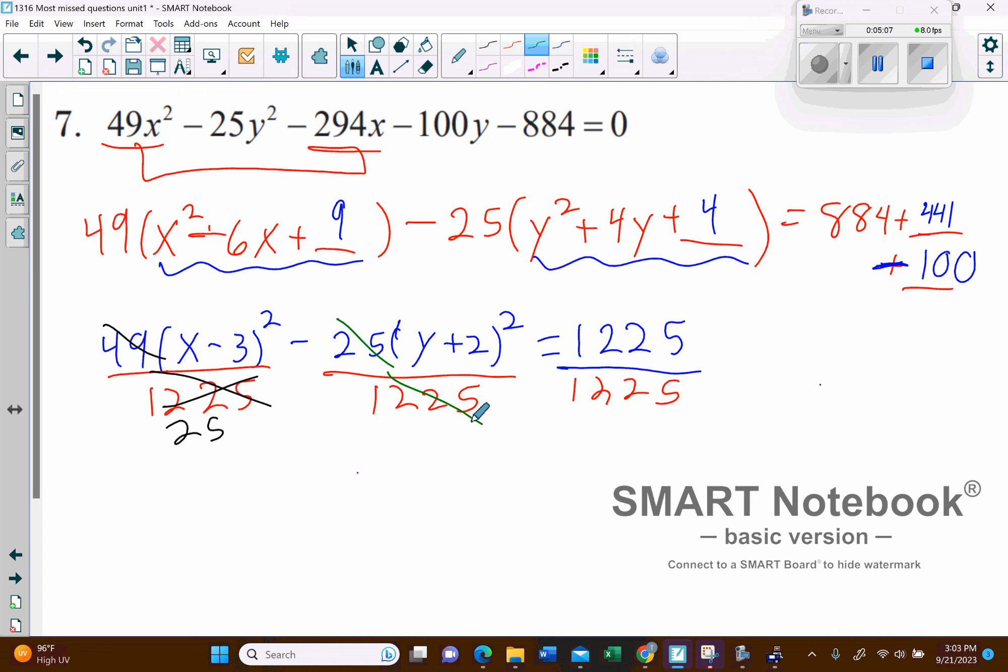So that will reduce right there to a 49, and then obviously this will reduce to a 1. And from there, you can find the center and all the key points to help you with graphing the hyperbola. So, if you want any further explanation, just let me know.